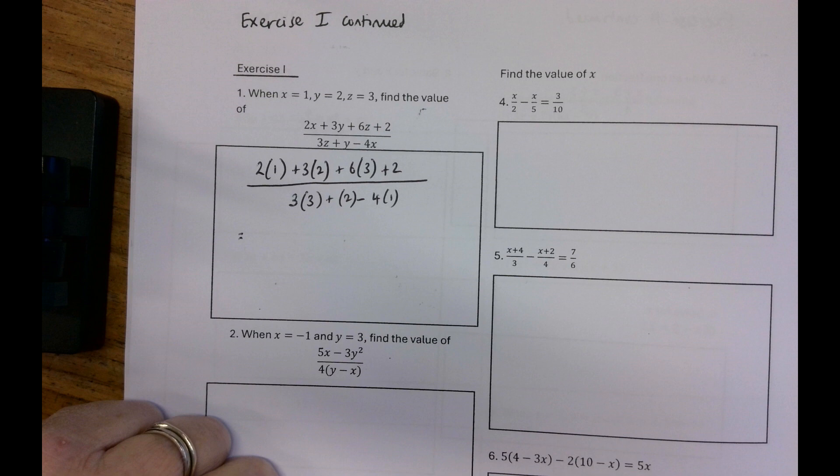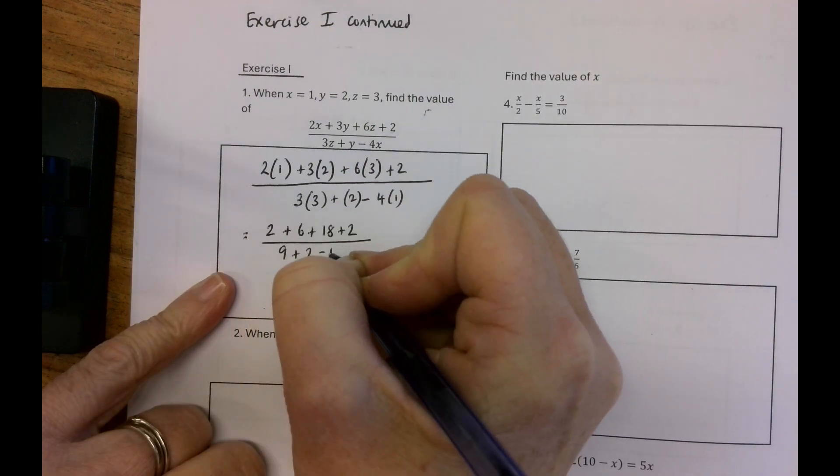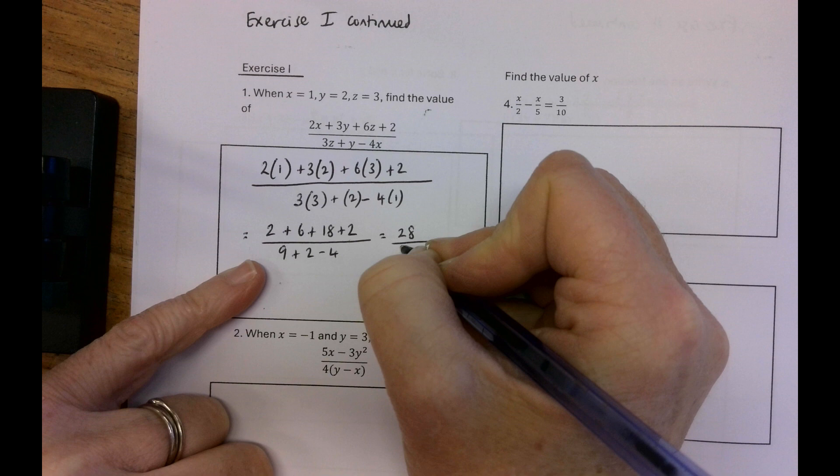There's lots of them so just be careful. 2 by 1 is 2, 3 by 2 is 6, 6 by 3 is 18 and 2 over 9 plus 2 minus 4. So what I've got is 28 over 7 which is 4.